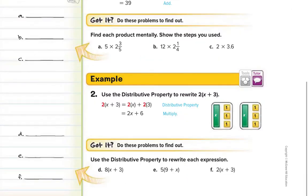On the bottom of page 486, you can see an example where we can't combine what's in the parentheses — problem D. If we want to simplify letter D, which is 8 times x plus 3, since we can't use PEMDAS, we need to use the distributive property.